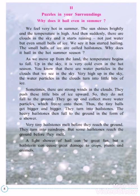During summer, the sun shines brightly and the temperature is high. Then suddenly there are clouds in the sky, and it starts raining — not just water but even small balls of ice. When this happens, we say it has started hailing. The small balls of ice are called hailstones.